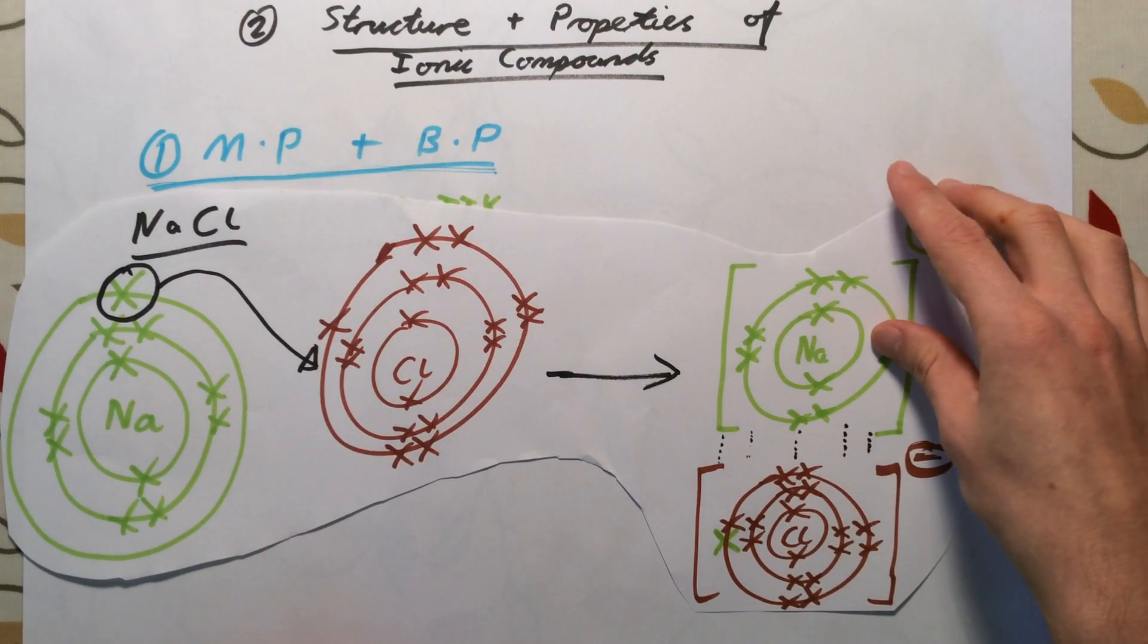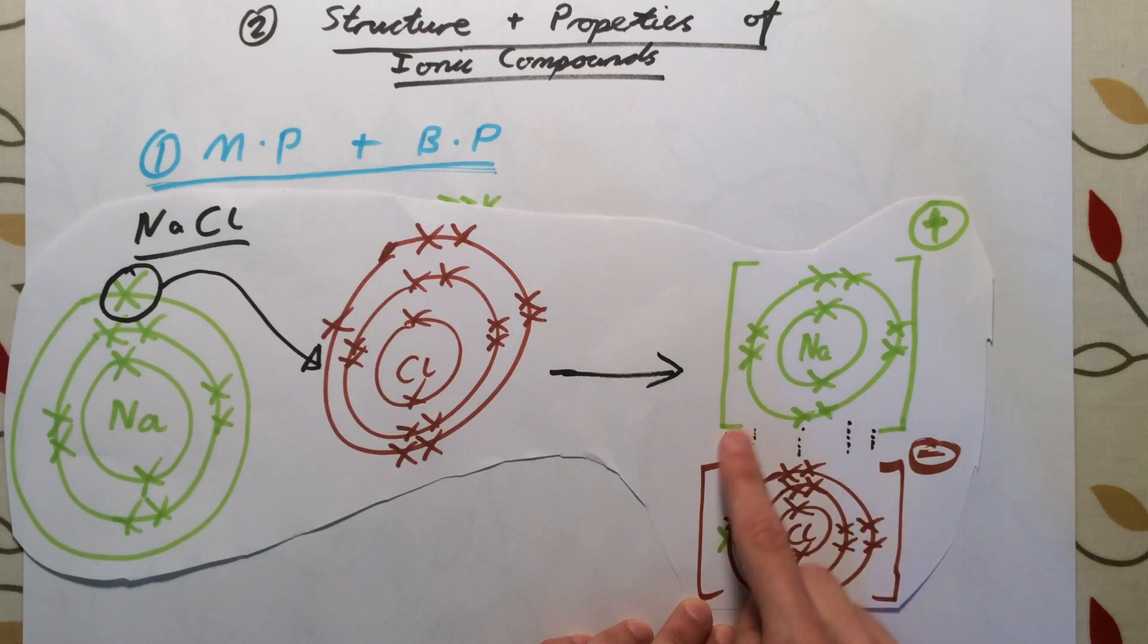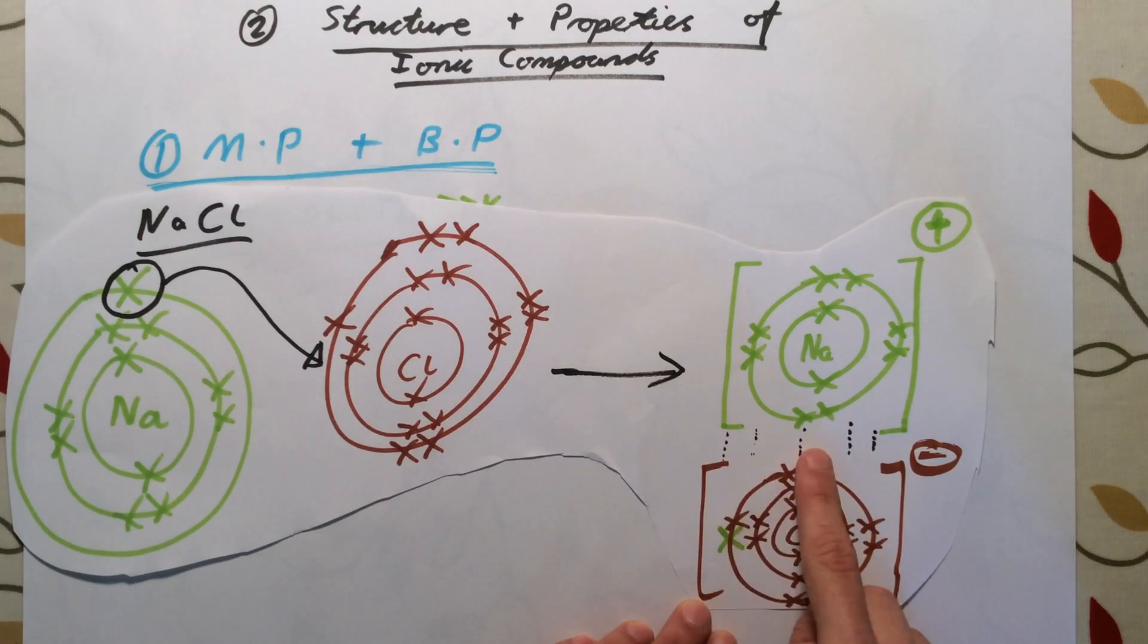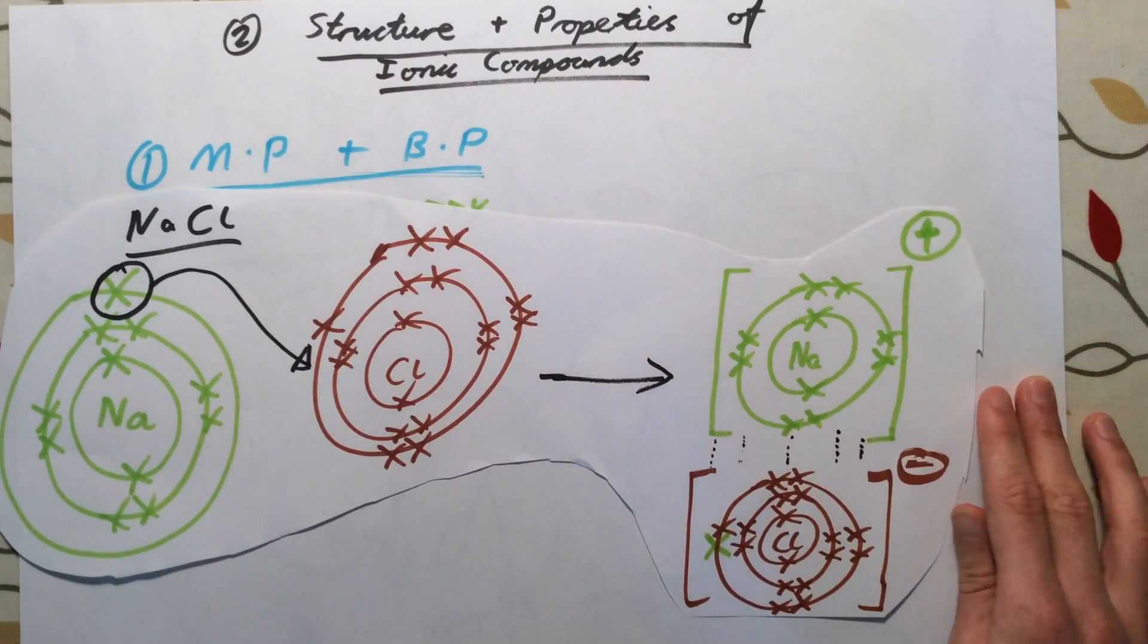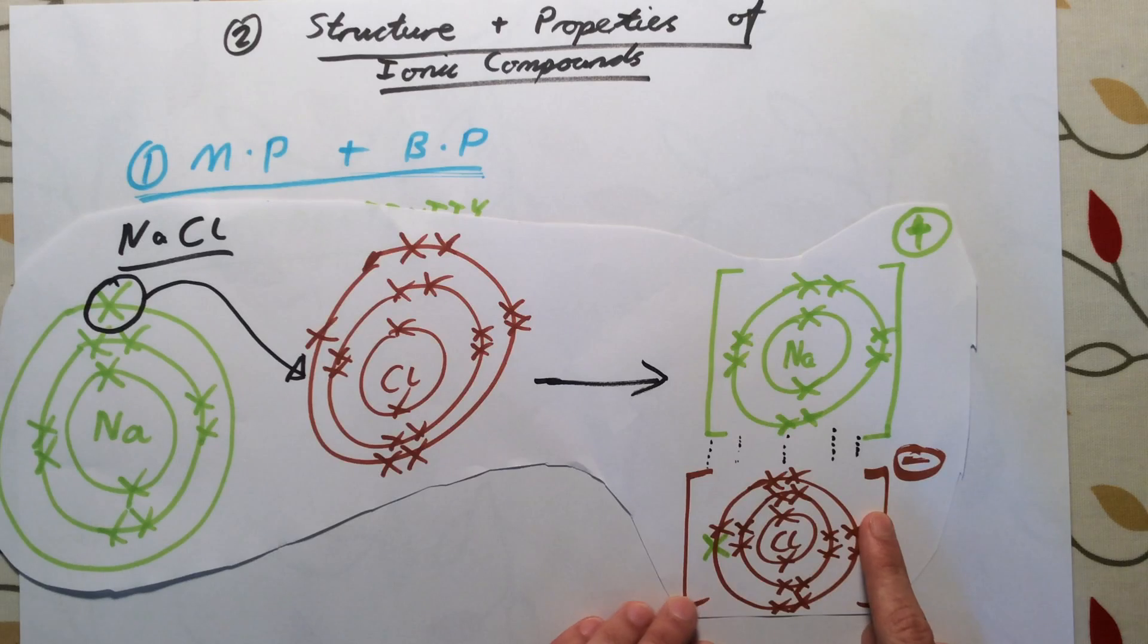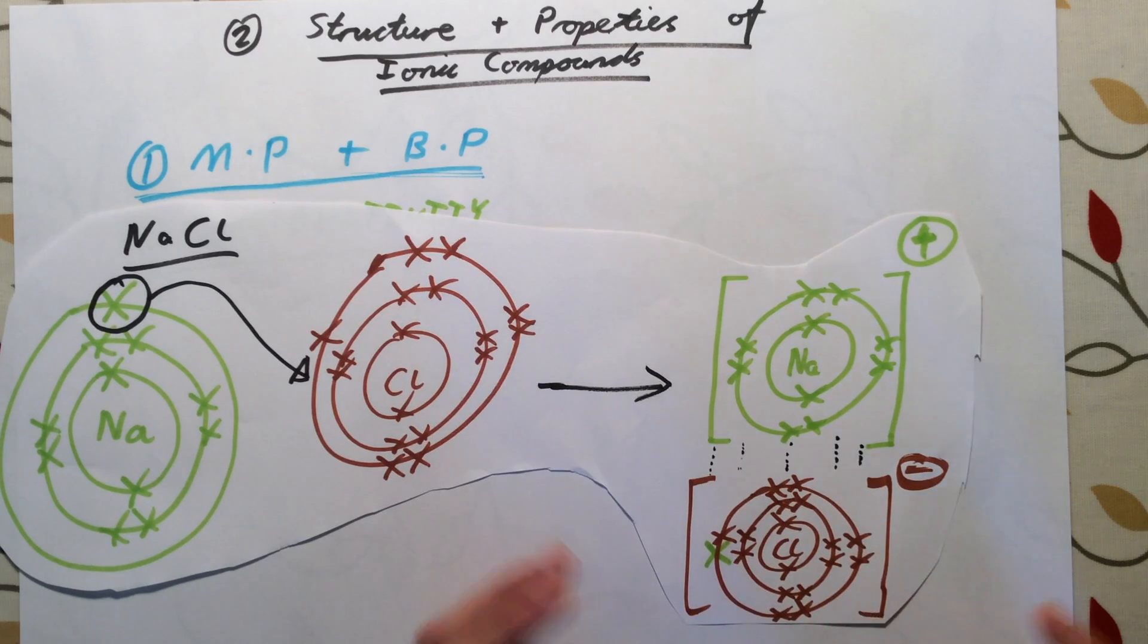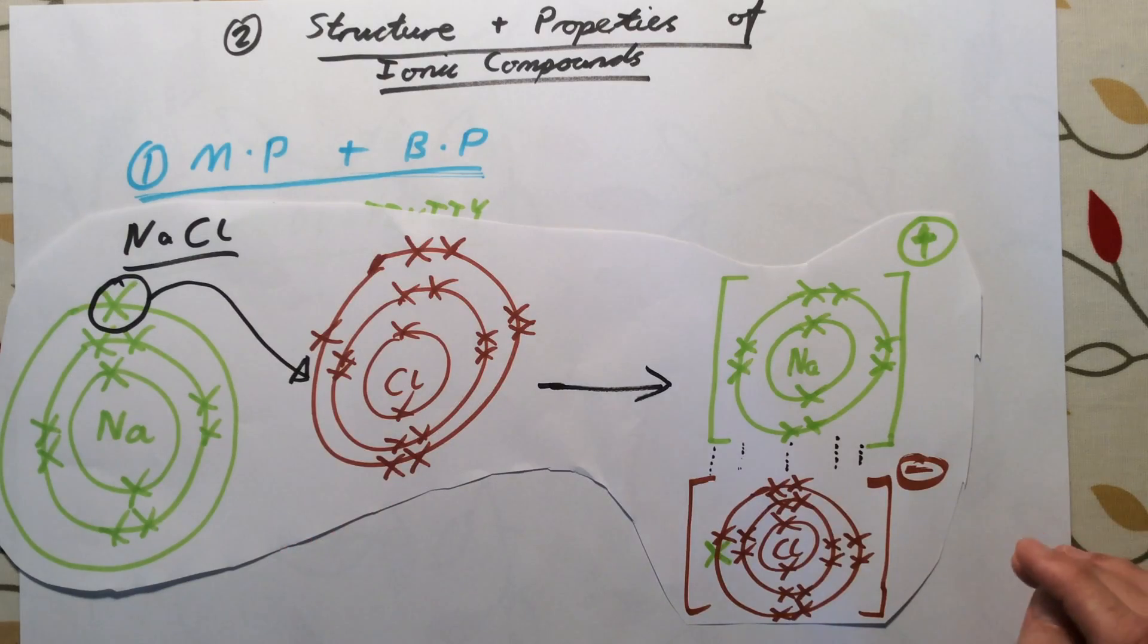What determines the properties of these compounds is this strong electrostatic force between the ions. What we need to understand is that there isn't just one positive ion and one negative ion in isolation - they're not on their own. They actually form a large crystal structure called an ionic lattice.